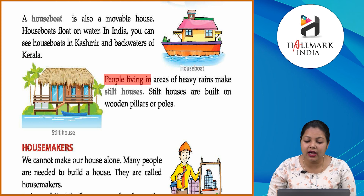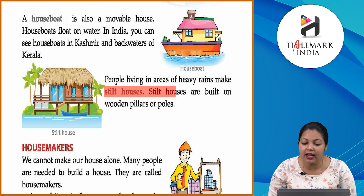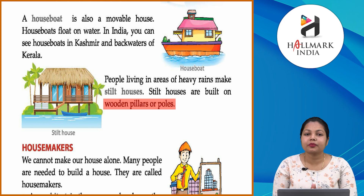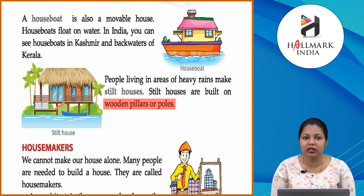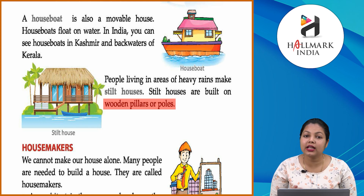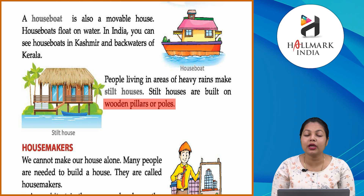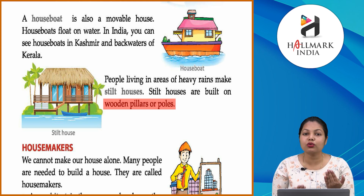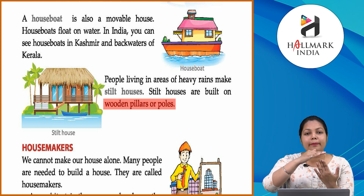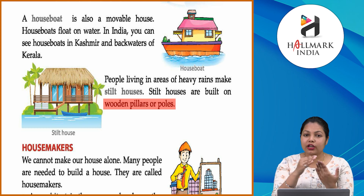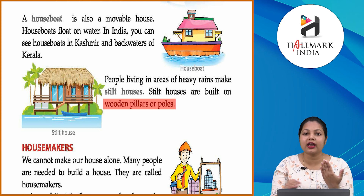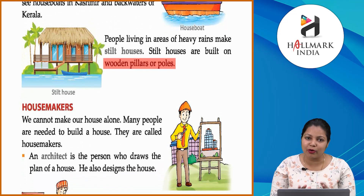People living in areas of heavy rain make stilt houses. Stilt houses are built on wooden pillars and poles. Stilt मतलब wooden stands होते हैं और उन stands के ऊपर houses को build किया जाता है, ताकि बारिश का पानी नीचे भर जाए तो घर तक न पहुँच पाए।